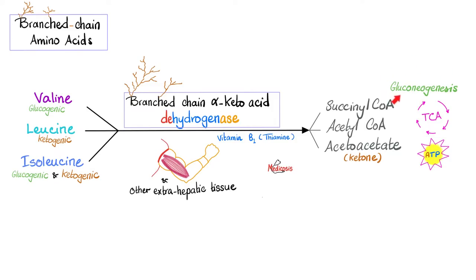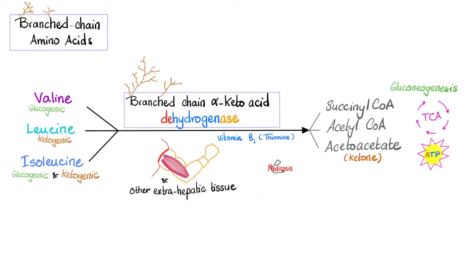Gluconeogenesis means formation of glucose from new, non-carbohydrate sources — like from proteins and amino acids. Valine can give you glucose because it's glucogenic. Isoleucine can give you glucose because it's glucogenic and ketogenic. But leucine can never give you glucose; leucine gives you ketone bodies such as acetone, acetoacetic acid, and beta-hydroxybutyric acid. Acetoacetate and beta-hydroxybutyrate have metabolic importance and can provide energy especially during fasting. This key enzyme requires vitamin B1 (thiamine) as a co-enzyme and is present mainly in muscle and other extra-hepatic tissue.